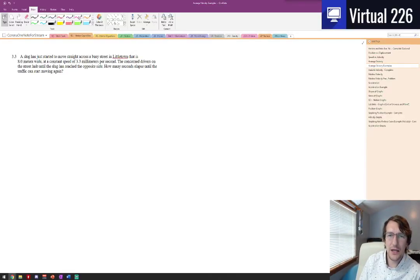We're back and we're at it. Okay, so we're looking at another practice problem for unit 2, this is number 3.3 for average velocities. What we've got is a slug that has started to move straight across a busy street in little town that's eight meters wide, eight meters about 24 feet, and the slug is moving at a very nice pace.